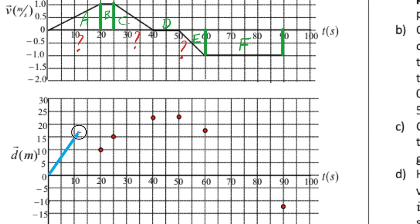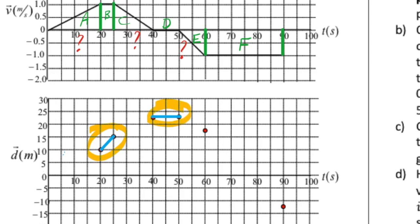We'll first handle the constant motion sections. In section B, it's constant motion, so the D versus T is just a straight line connecting the given points. For section D, the object is at rest, so the line is perfectly horizontal — slope of zero equals rest. For section F, constant negative velocity gives a negative slope on the D versus T graph.